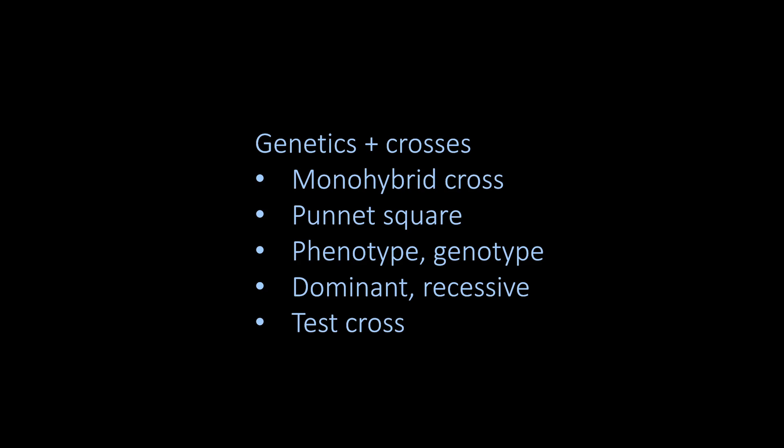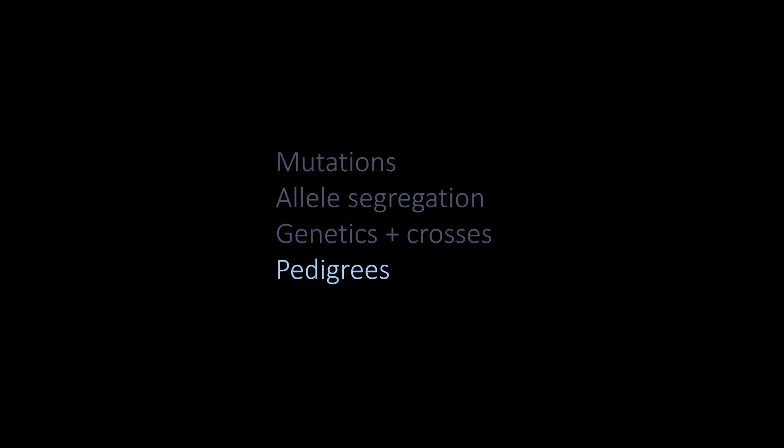The kind of genetics that we've been talking about is very important using the tools we've been discussing. But sometimes the genetics of a particular trait are very complicated. There might be many genes involved, there might be traits associated with sex, or traits influenced in ways we just don't understand. And then we turn to another set of tools to understand these complicated traits — and those are called pedigrees.